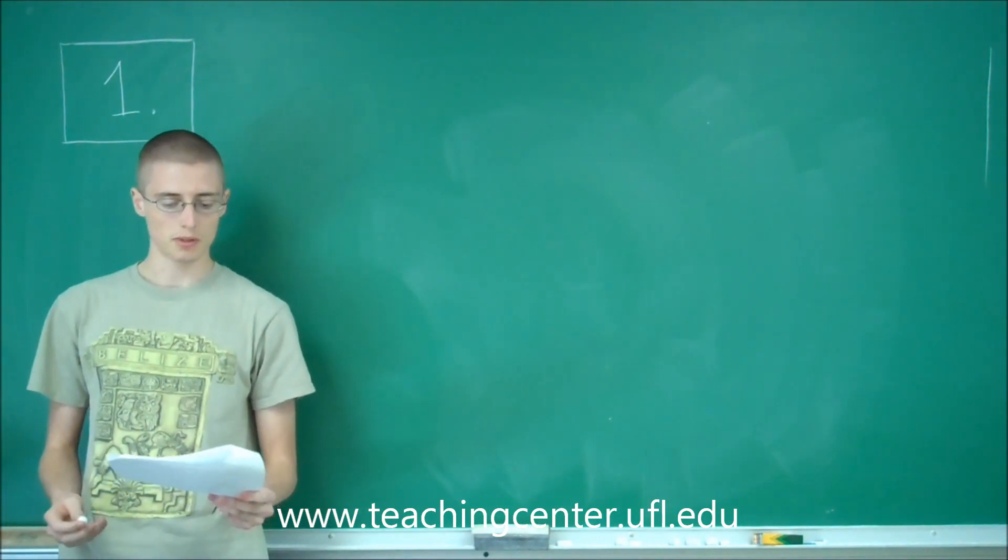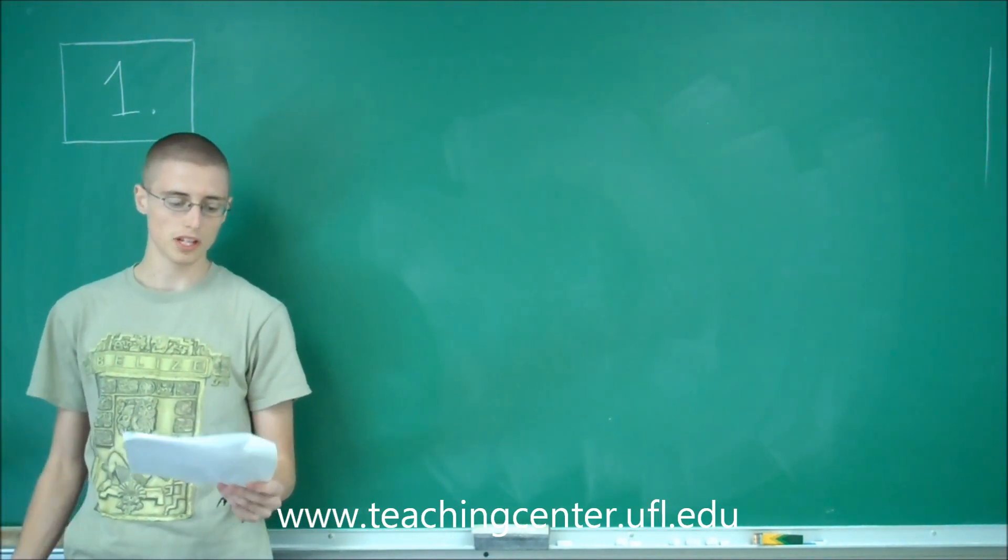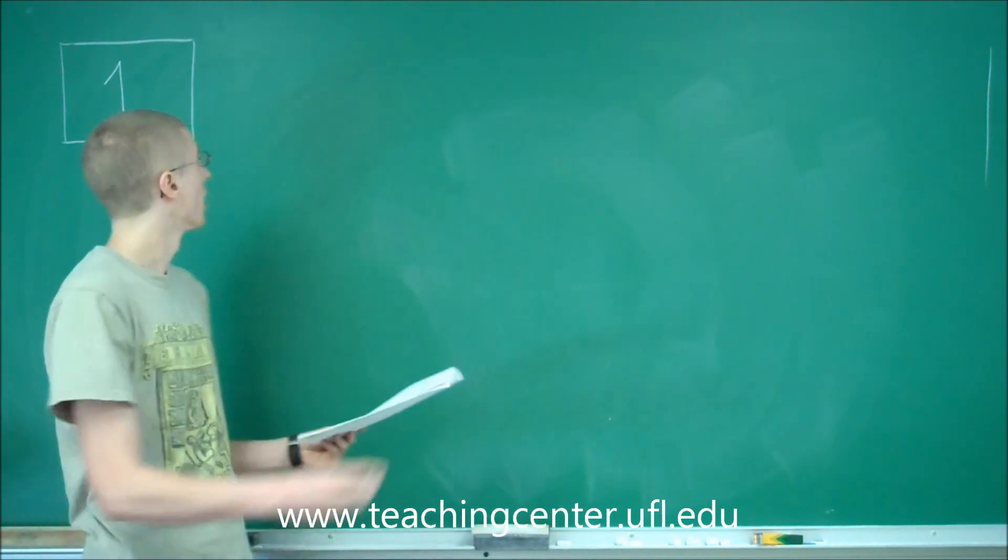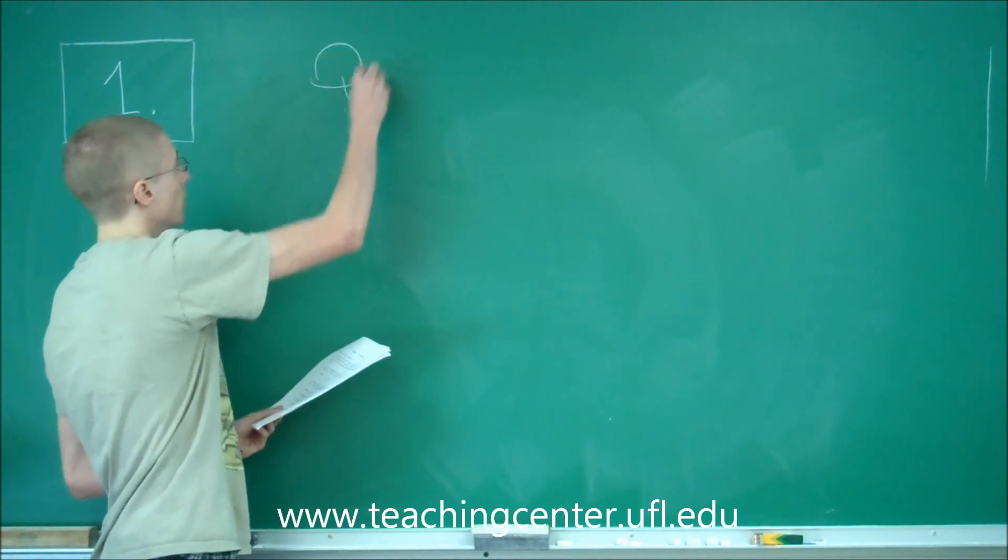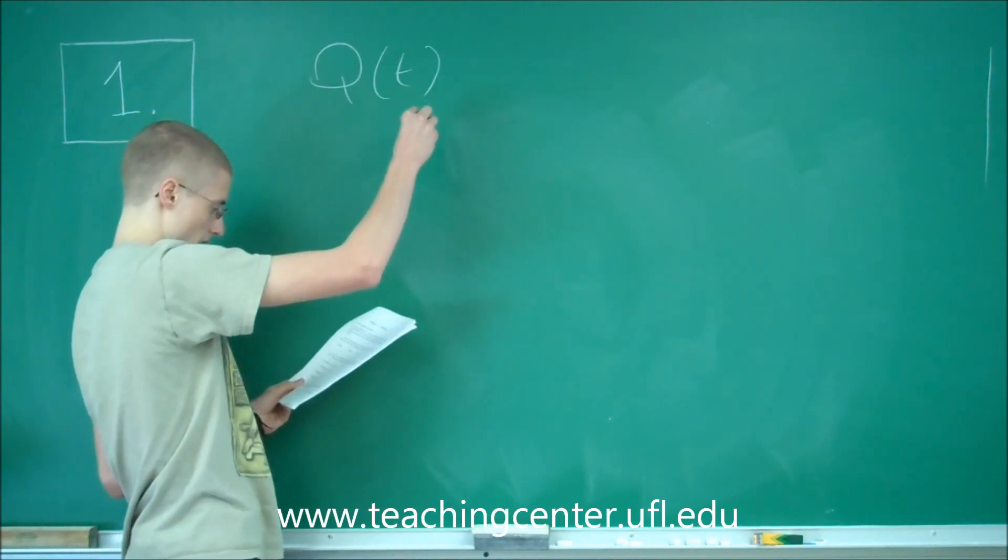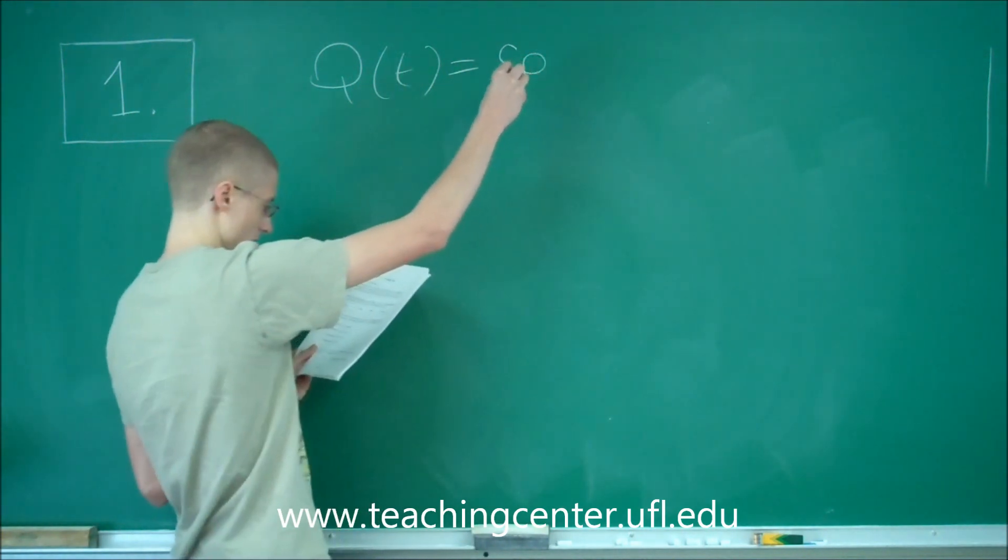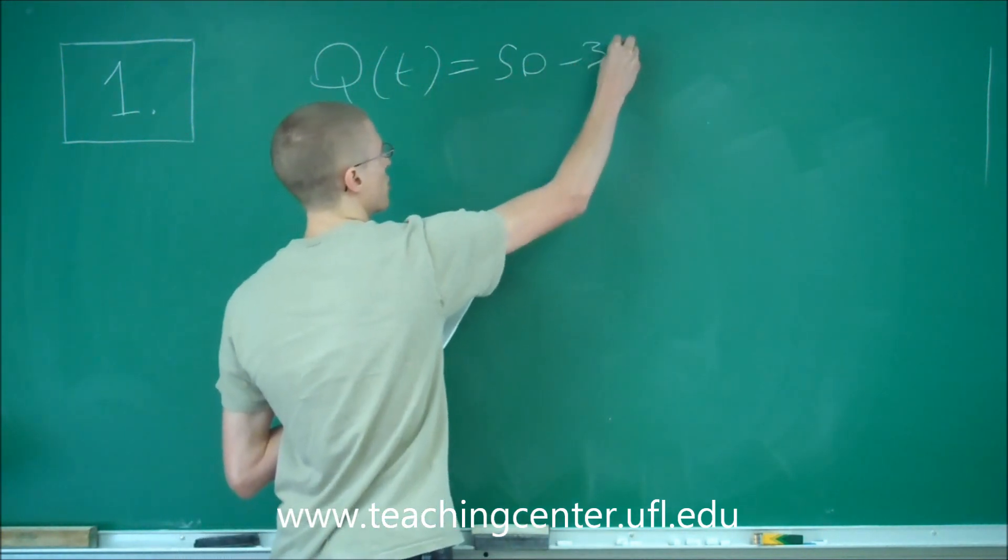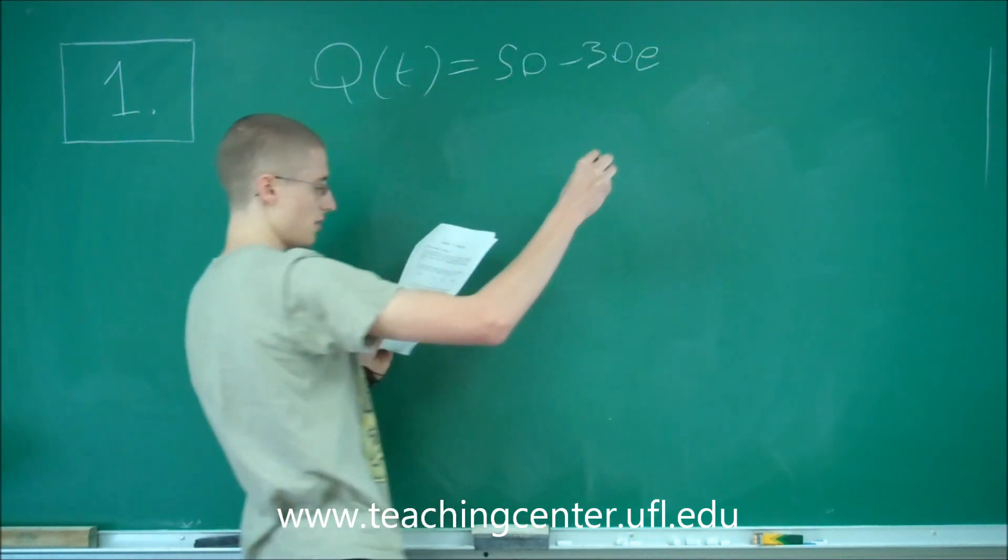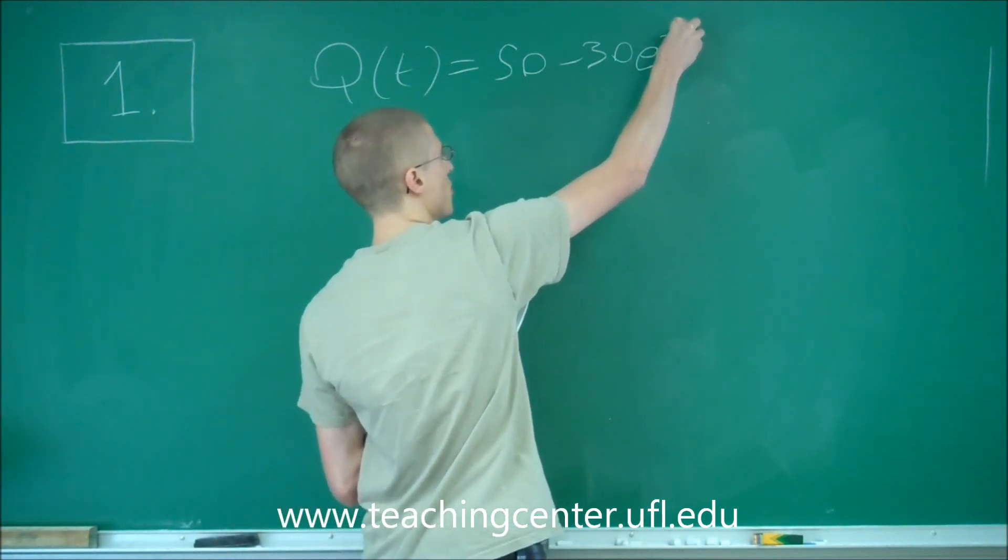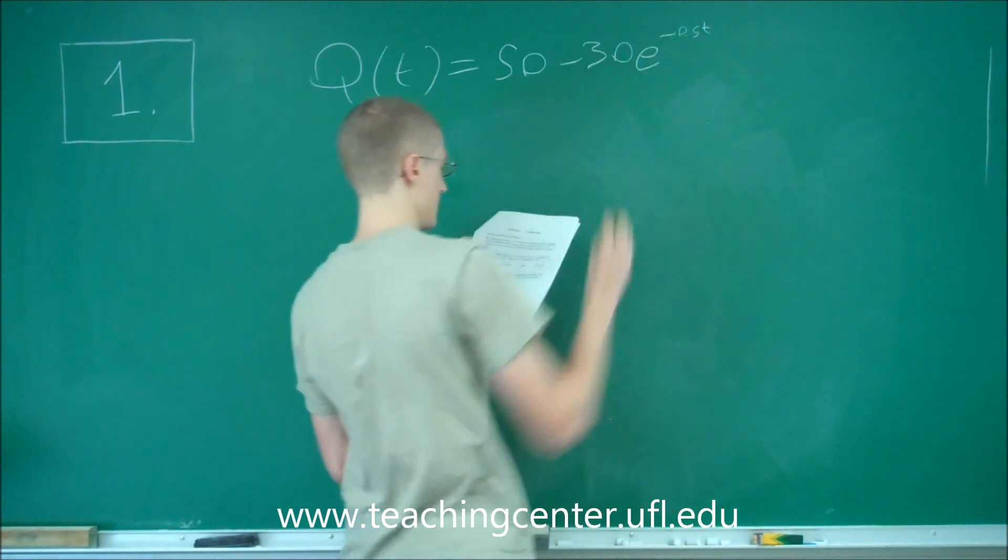The training department of a company has determined that an employee who has completed a basic training course can assemble Q(t) equals 50 minus 30e raised to the negative 0.5t.